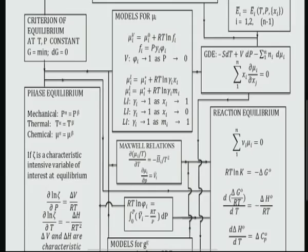Then you have this d of delta G0 by T is equal to delta H0 and then similarly d of delta H0 by dT is delta C_p. So you have to measure delta C_p.